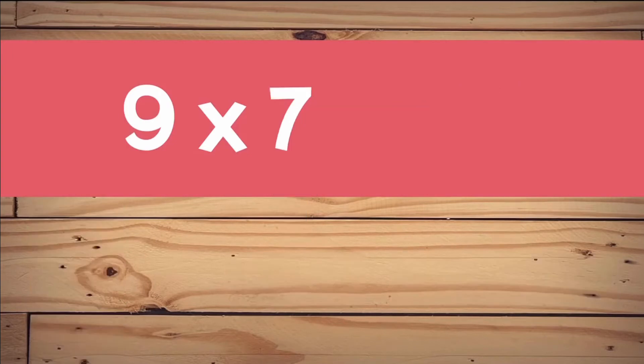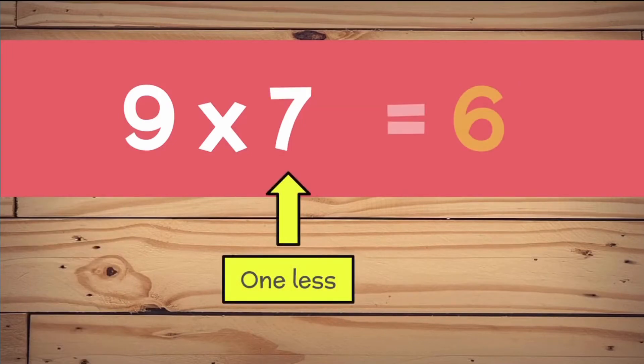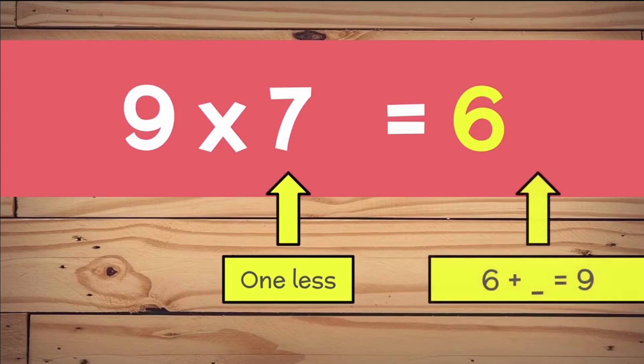9 times 7. 1 less than 7 is 6. And 6 plus 3 more is 9. So 9 times 7 equals 63.